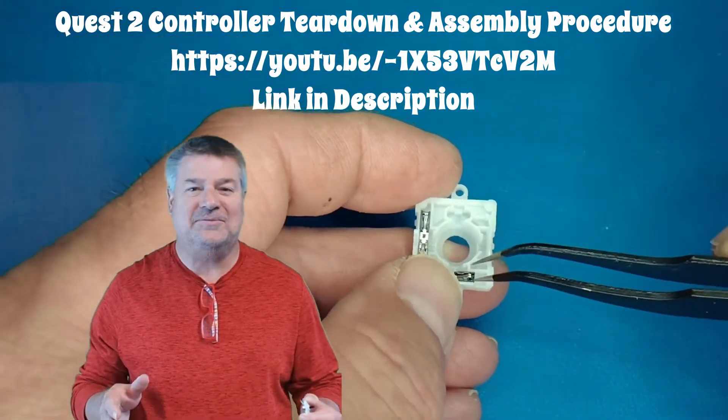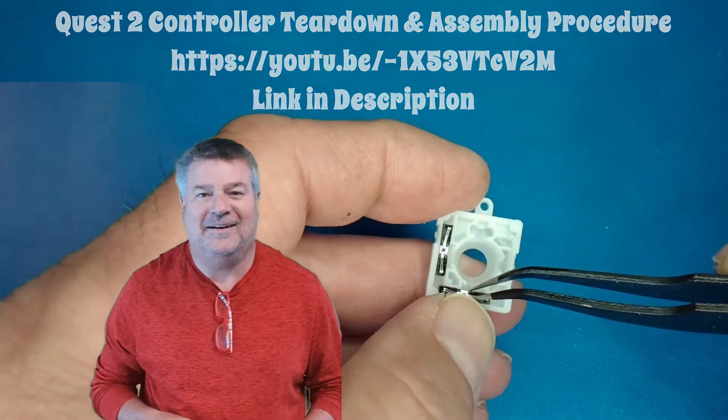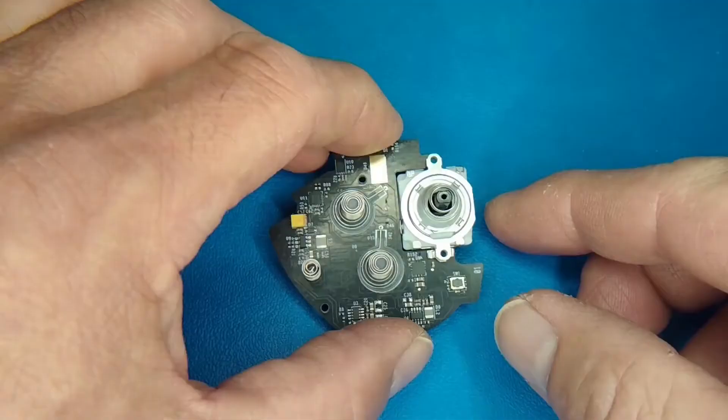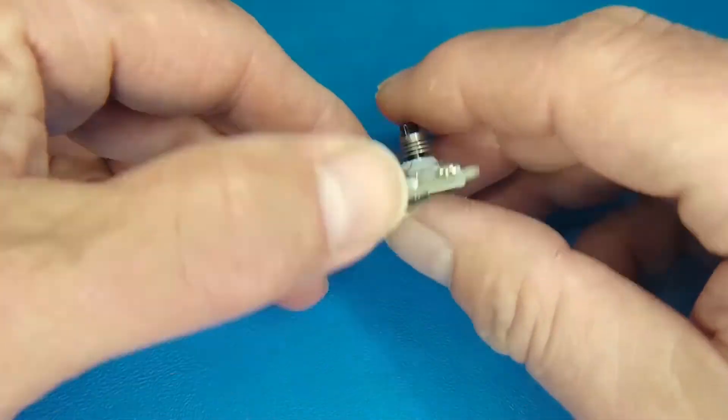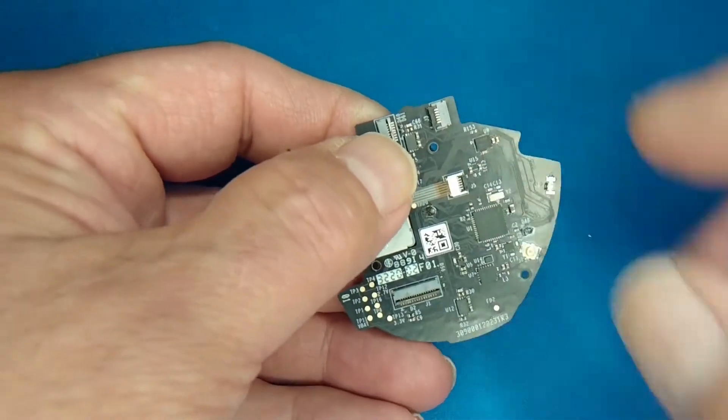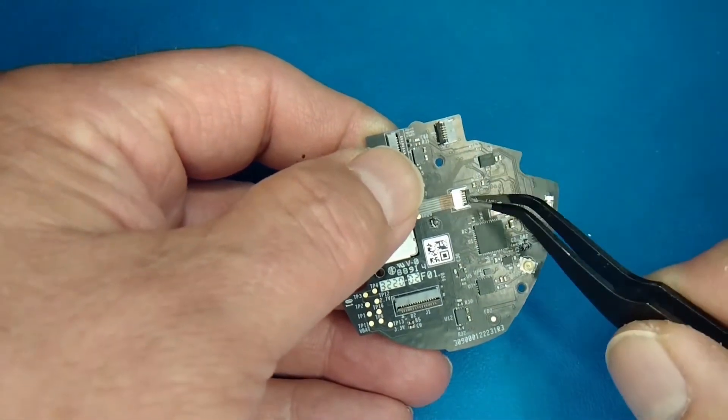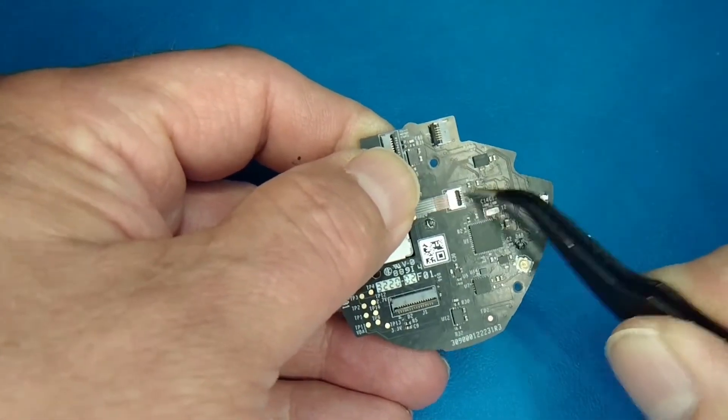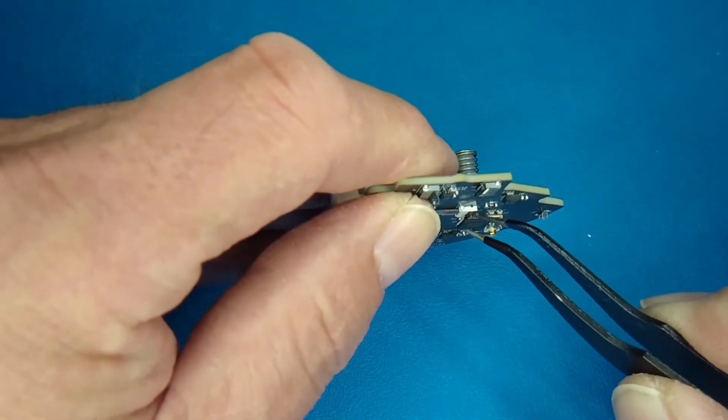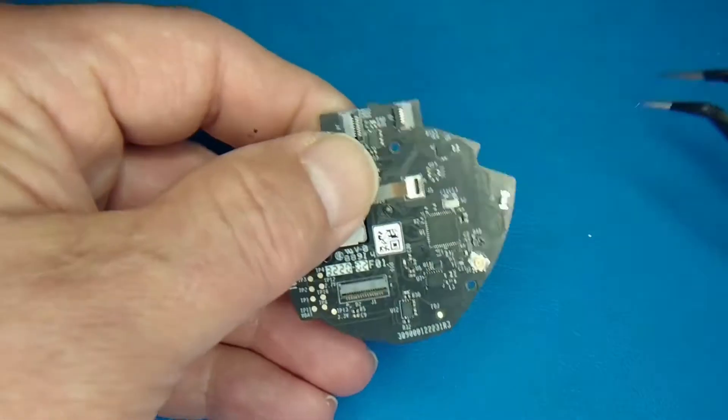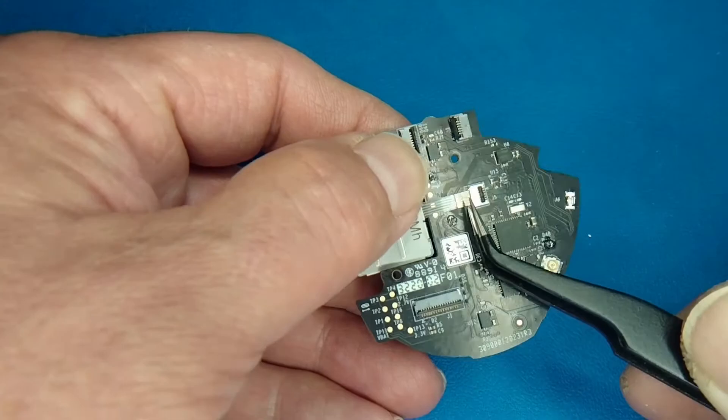Let's jump in, have some fun, get this done. All right, let's go. So you're going to follow the teardown procedure until you get the circuit card out of the controller. Now we're going to pull the transducer off. To do that there's a little flex cable there. You flip up the little tab and then make sure the ribbon cable comes out.